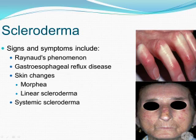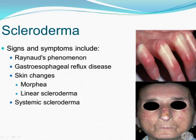Scleroderma is a group of rare progressive diseases that involve the hardening and tightening of the skin and connective tissue — the fibers that provide the framework and support for the body. Localized scleroderma affects only the skin. Systemic scleroderma also harms internal organs such as the heart, lungs, kidneys, and digestive tract. Scleroderma can run in families, but in most cases it occurs without any known family tendency for the disease. Scleroderma isn't considered contagious, but it can greatly affect self-esteem and the ability to accomplish everyday tasks.